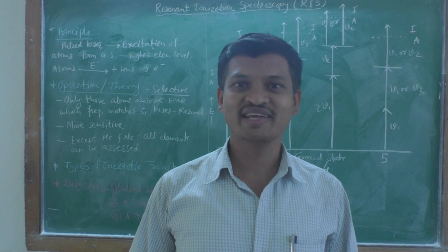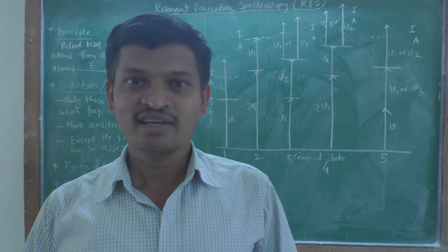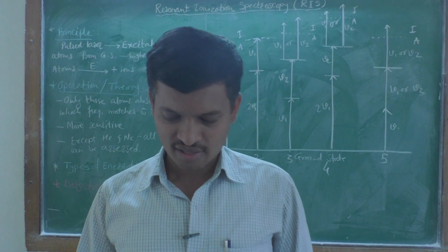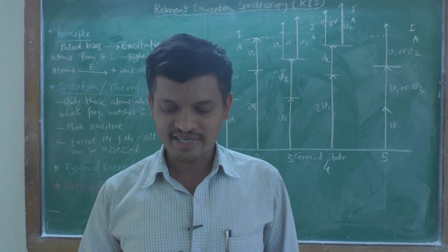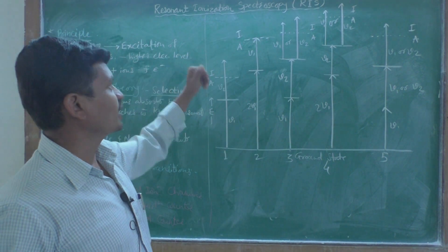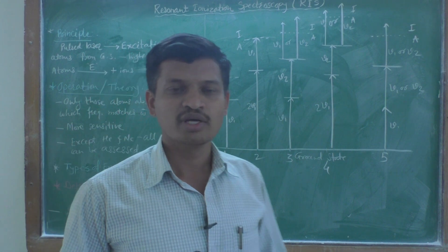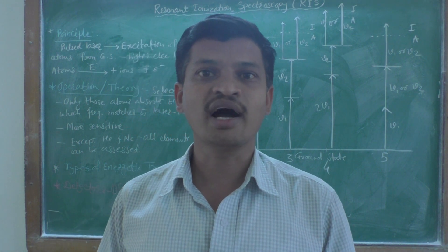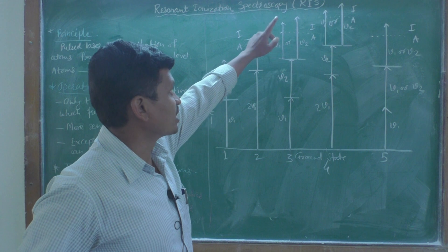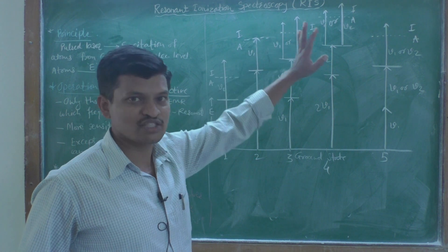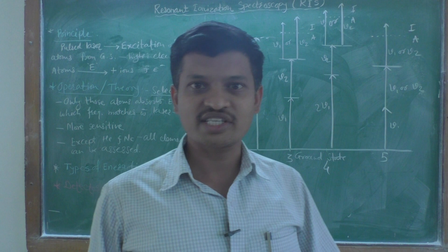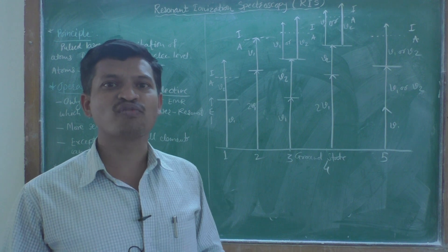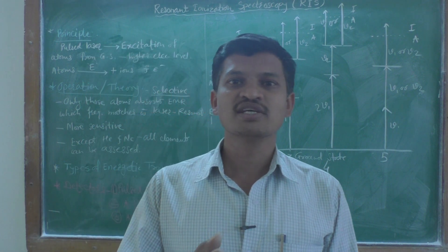Welcome back. In this video lecture, today we are going to learn a new spectroscopy technique. The title is Resonant Ionization Spectroscopy, which can be termed as RIS. R stands for Resonance, I stands for Ionization, and S stands for Spectroscopy. It is very similar to atomic fluorescence spectroscopy, which is why it is studied under that heading.